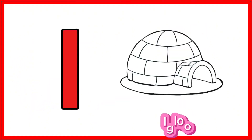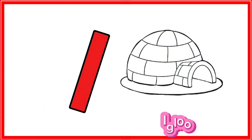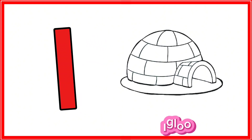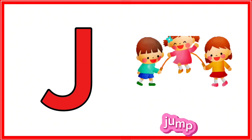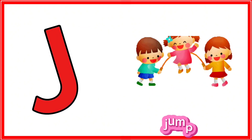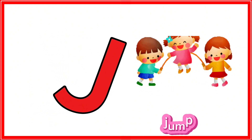I is for igloo, i-i-igloo. J is for jump, j-j-jump.